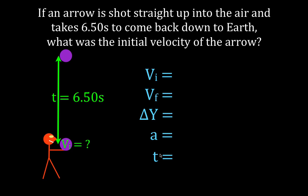We're told the time is 6.5 seconds. We know, although it's not stated in the problem, we know because this is free fall kinematics, that the acceleration is minus 9.81 meters per second squared. We're asked to find the initial velocity.